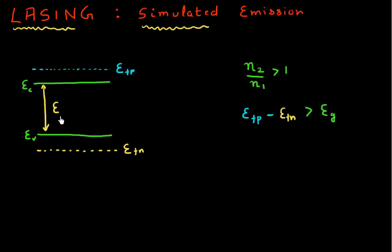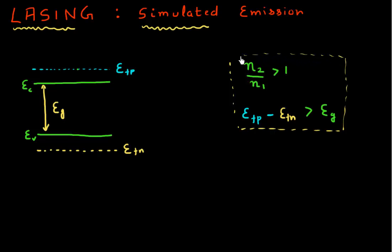What I want to do in this video is to explore how we can achieve this. Because if you think about it, this doesn't seem very readily achievable. Normally we are used to seeing these quasi-Fermi levels, EFP and EFN, within the bandgap of the semiconductor material — unless you have degenerate doping where the quasi-Fermi level moves into the conduction and valence bands.